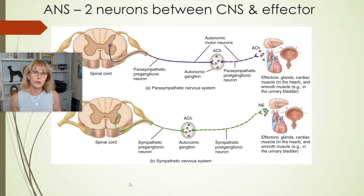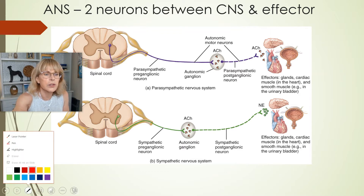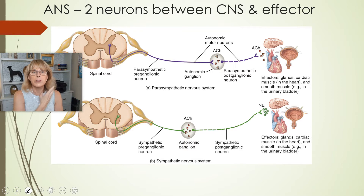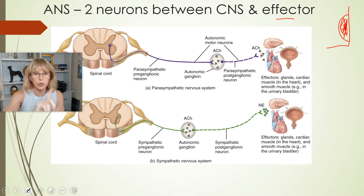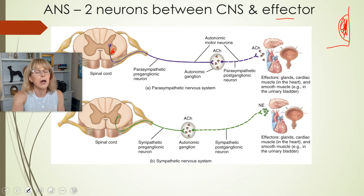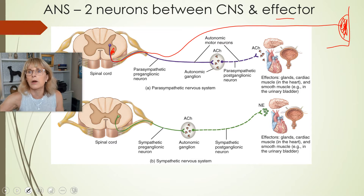We were talking about how the autonomic nervous system's arrangement of neurons has some substantial differences from the somatic nervous system. One of the differences is the number of neurons between the central nervous system and the effector. The effector for the somatic nervous system would be like a muscle — your biceps, for example. If the somatic nervous system wants to make that biceps contract, it has the cell body and dendrites of an axon in the ventral horn, going out through the ventral root straight to the muscle. One neuron.